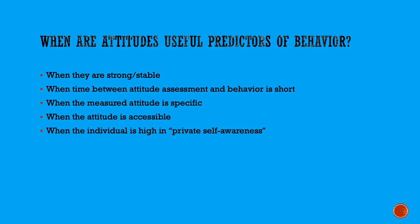Individuals differ from each other in what we call private self-awareness — some people introspect a lot, they think about themselves a lot, and they're more in touch with what their attitudes about things are. For these individuals, attitudes are usually better predictors of behavior, simply because those attitudes are more in the person's consciousness than for individuals who are not as high in private self-awareness.